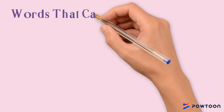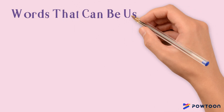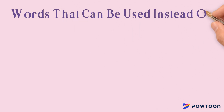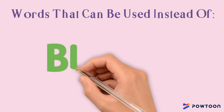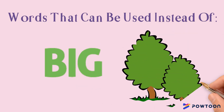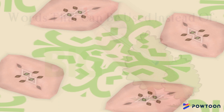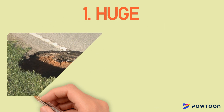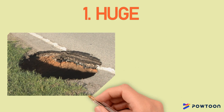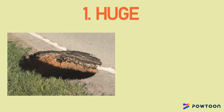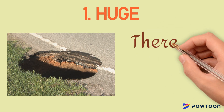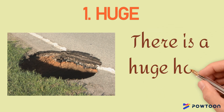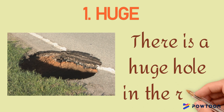Now let's study the words that can be used instead of 'big'. Number one: huge. Huge also means very big — bahut bada. Like in this picture we can see a big hole, so we can say: 'There is a huge hole in the road.'